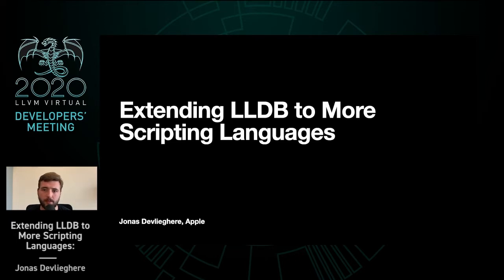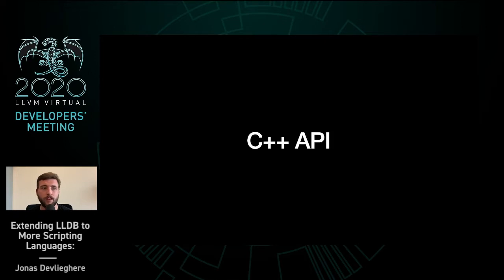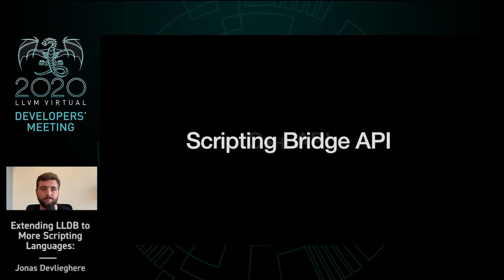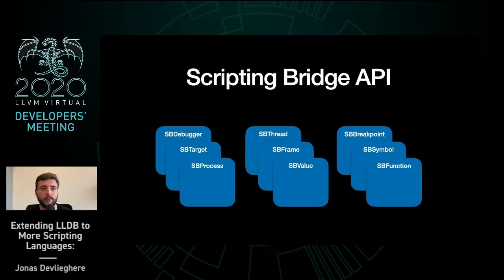Scriptability is one of the features that makes LLDB so powerful. Since its inception it has played a central role in LLDB's design. Similar to how LLVM is a collection of reusable libraries, LLDB is really a debugger library that comes with a stable C++ interface called the scripting bridge, or SB API.